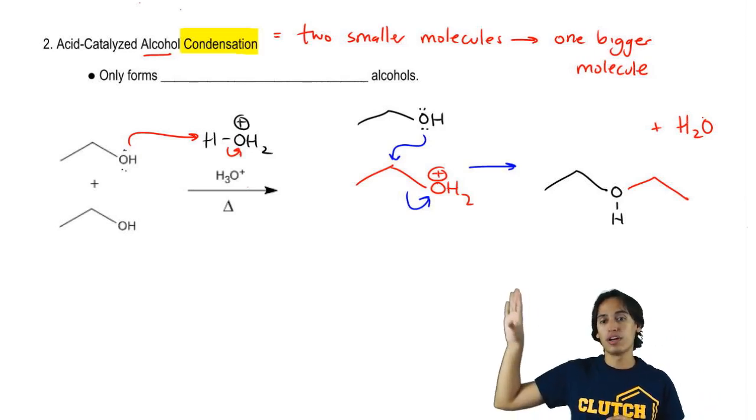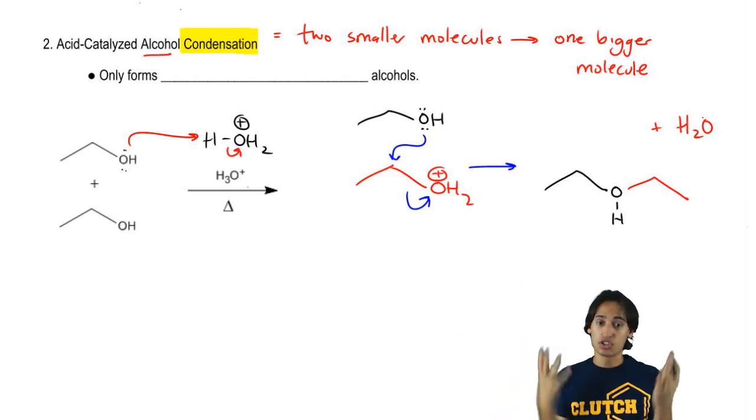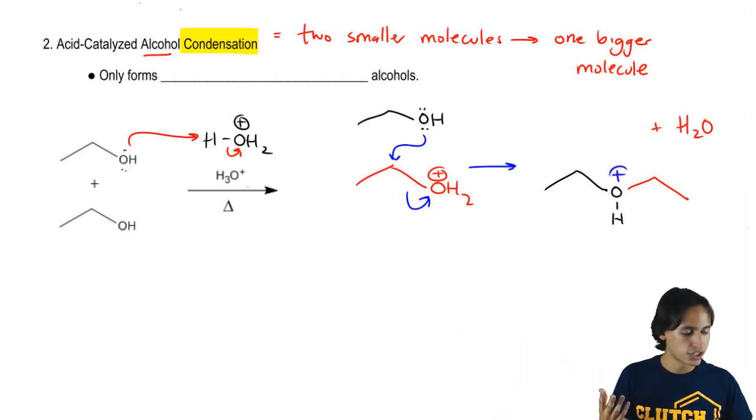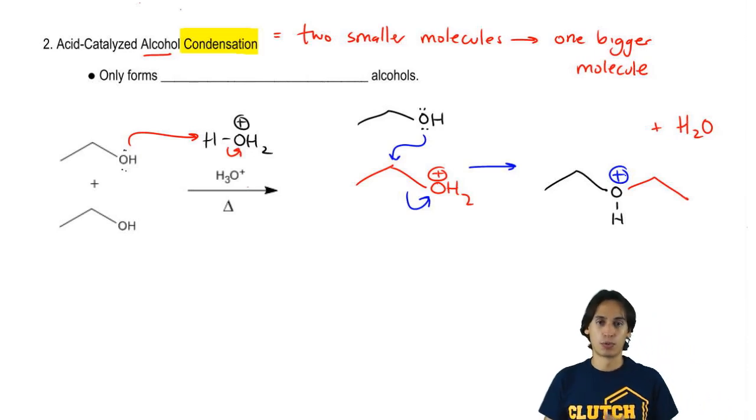So we've got the black one attacking the red one. This looks like an ether, but we've got a problem. There's a formal charge. So what can we do about that formal charge?